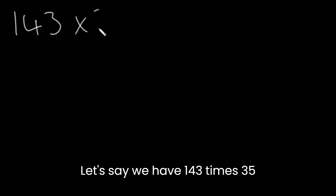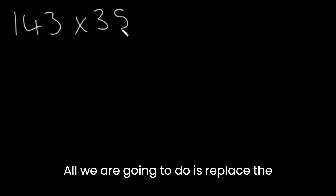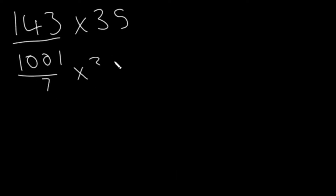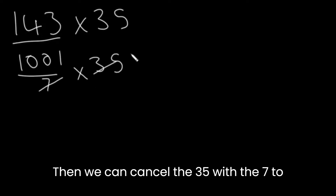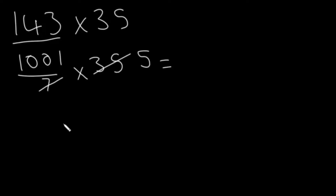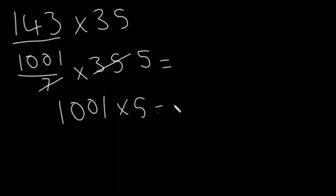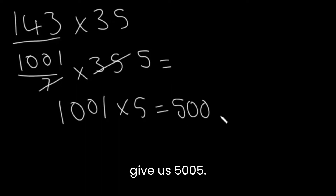Let's talk about how to multiply by 143. Let's say we have 143 times 35. All we have to do is we replace 143 with 1001 over 7. Then we can cancel the 35 with the 7 to get 5. 1001 times 5 will give us 5005.